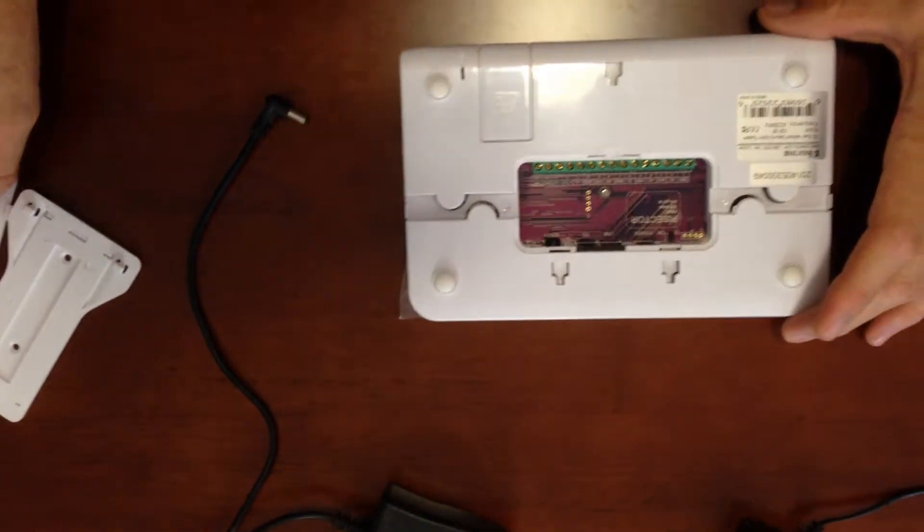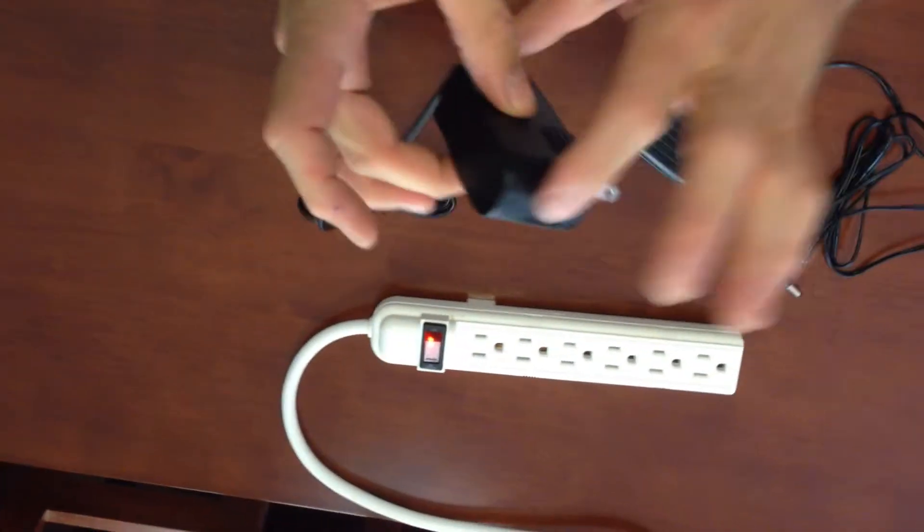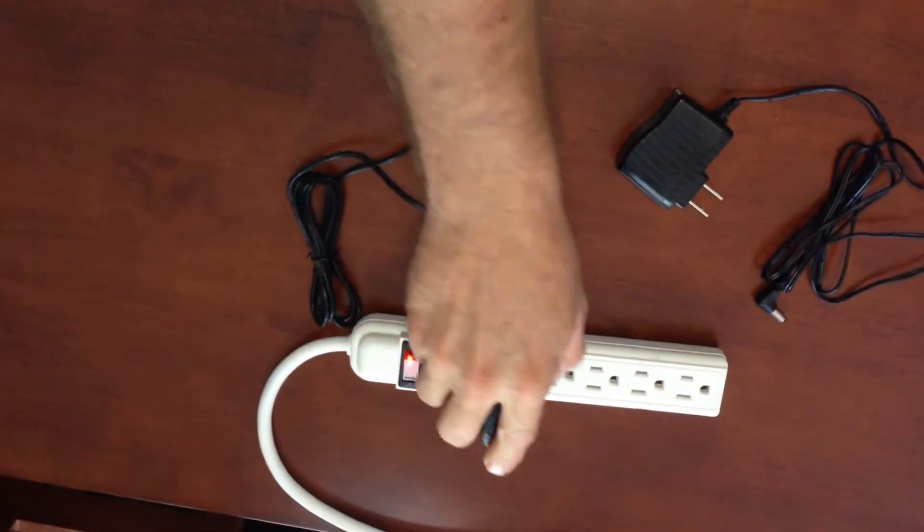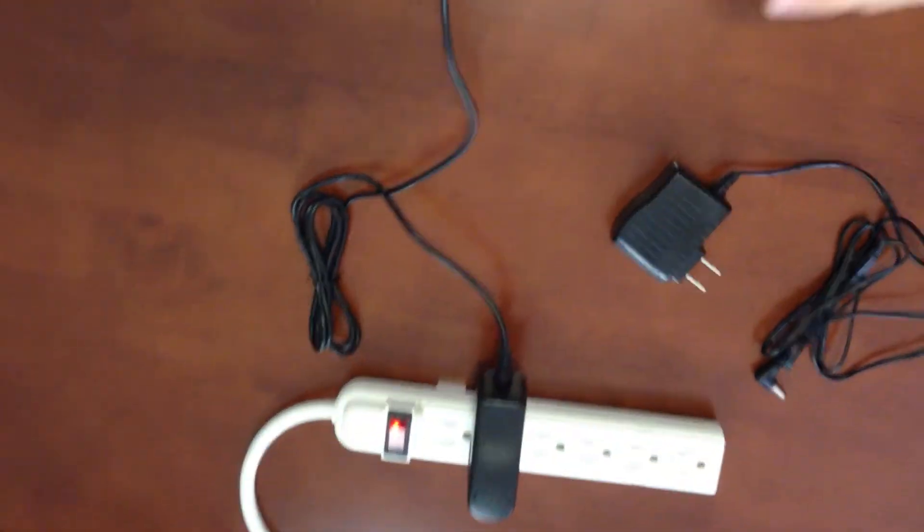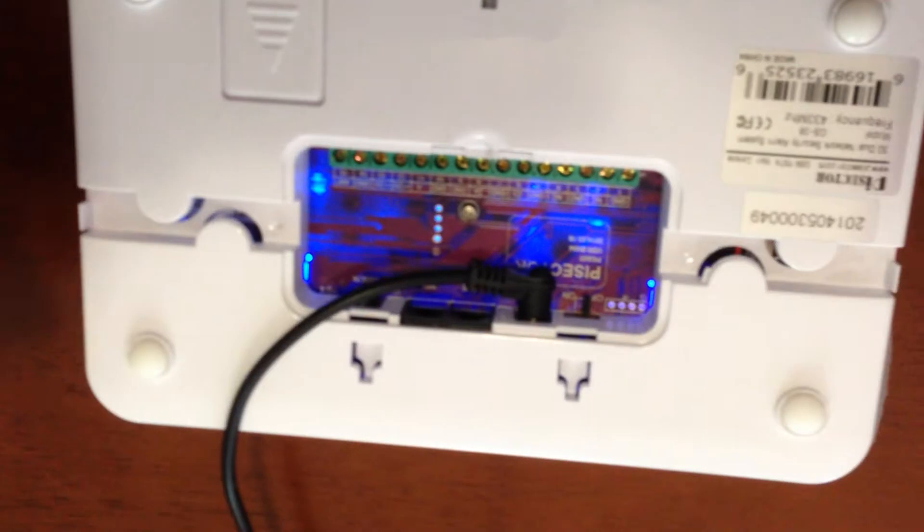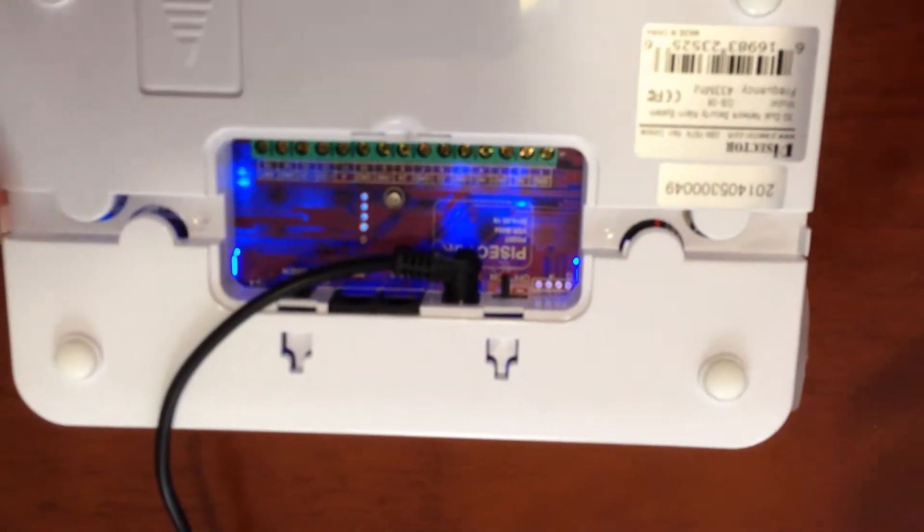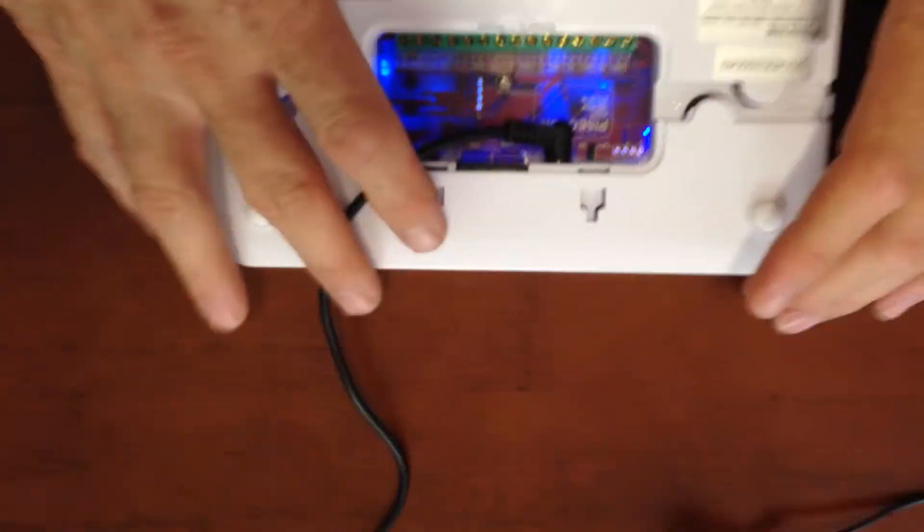Now what we want to do is hook up the 12 volt power cord to the panel. 12 volt is the bigger one here. It goes to where it says power. Hook it in there, lights up, and you must turn this switch on which is going to be charging your battery also. I'll turn the panel over and we will plug this in.